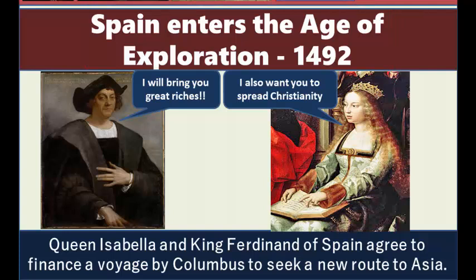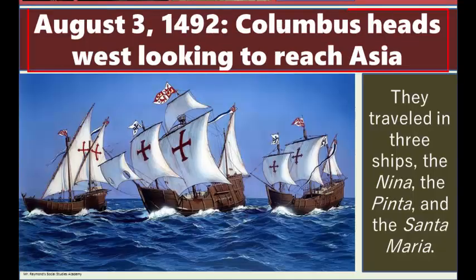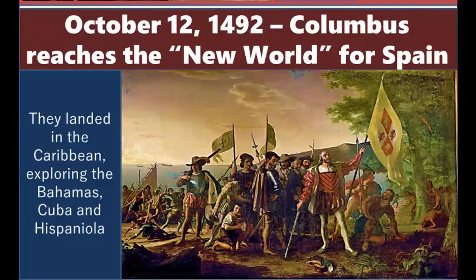The famous journey of Columbus in 1492 marked Spain's entry into the Age of Exploration. Columbus, an Italian, had found financial backers in Queen Isabella and King Ferdinand of Spain to seek a new route to Asia. He promised them riches, and Queen Isabella, a devout Catholic, also wanted to spread Christianity. On August 3rd of 1492, Columbus headed out in three ships — the Niña, the Pinta, and the Santa María — not down the African coast but headed west, thinking he could circle the globe to reach Asia. Two months later, Columbus landed in the Caribbean, claiming these new lands for Spain. And thus, the so-called new world was discovered.